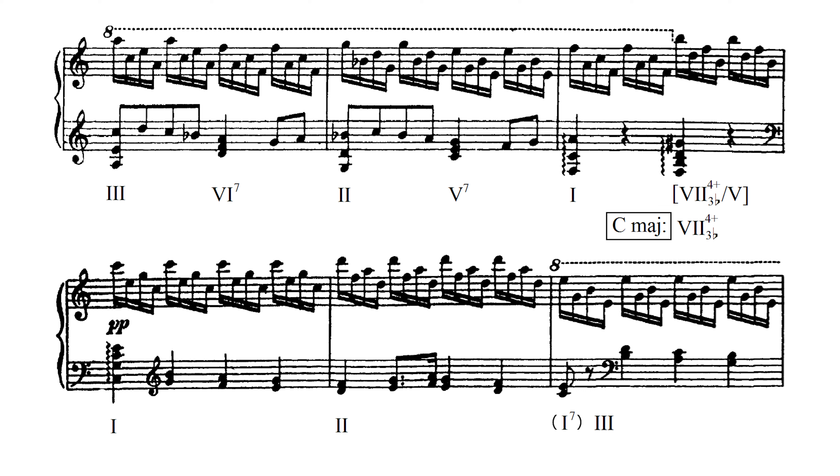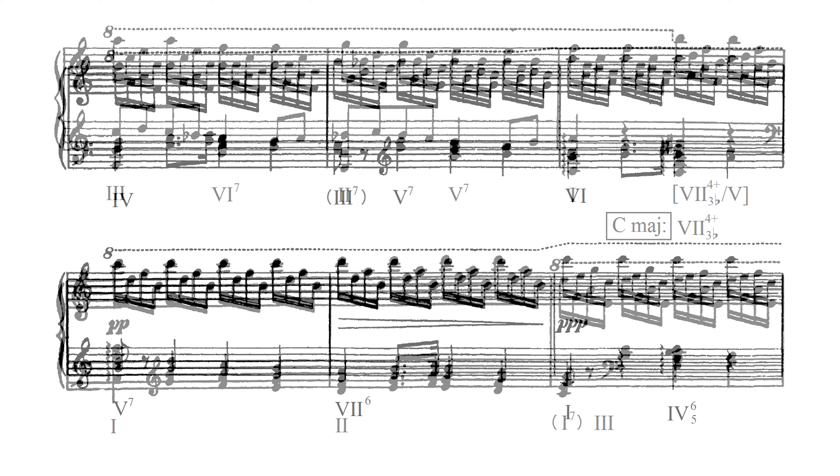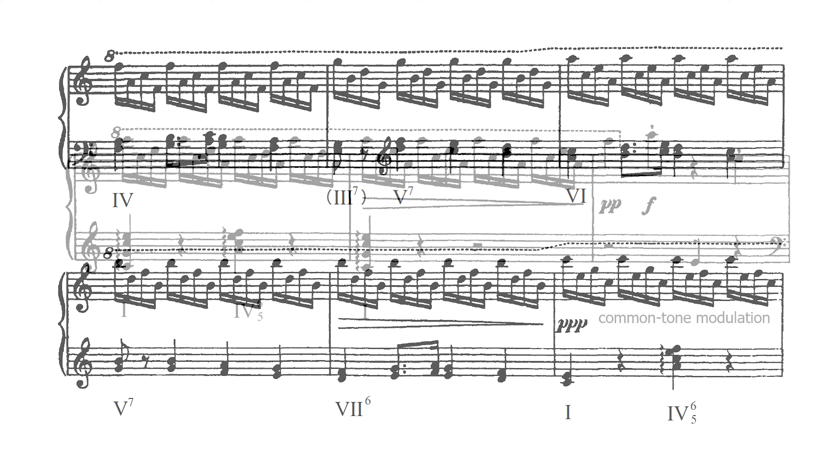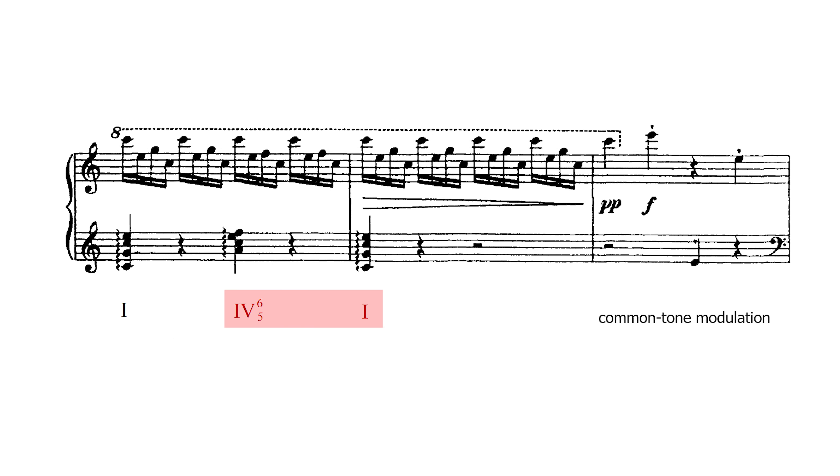Then the second part of the A section starts, A2. In this section the accompaniment follows a parallel chord progression, from tonic to the seventh scale degree. The main theme is repeated throughout meandering in the different chords inherent in the C major scale. This section ends with two plagal cadences.